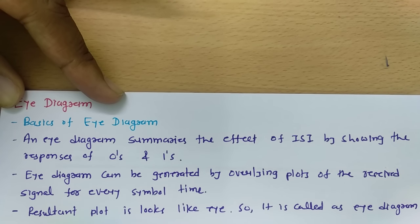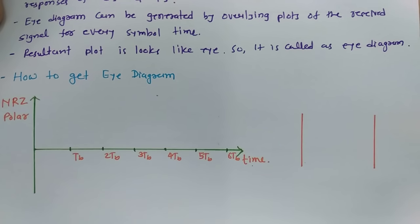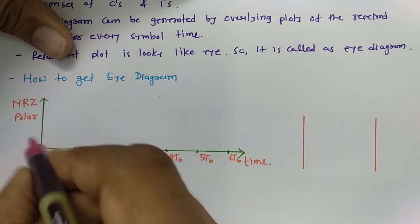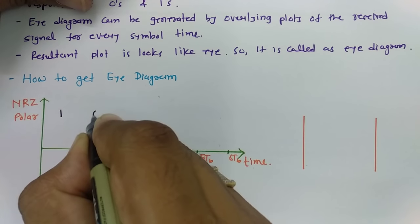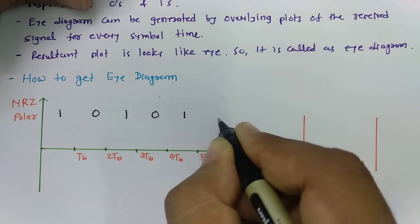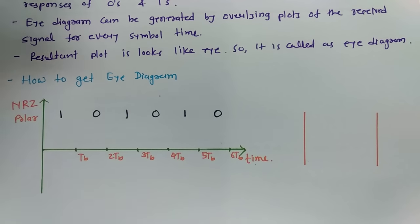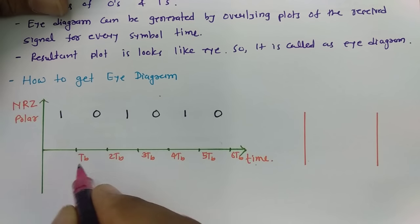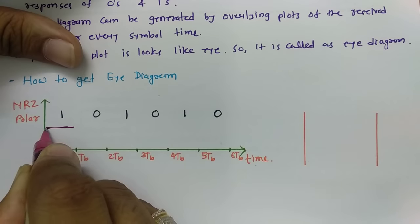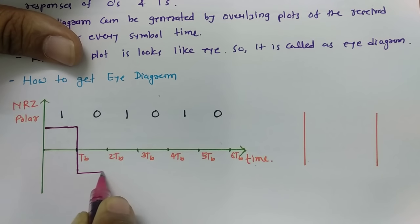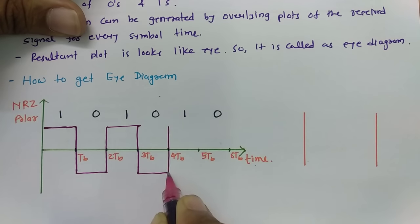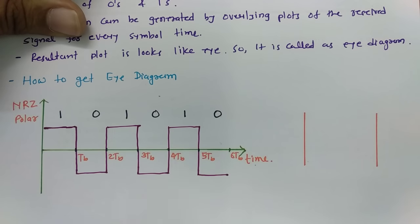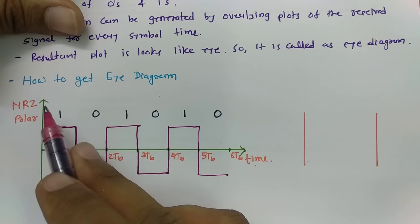The resultant plot of the eye diagram looks like an eye, which is why it is called the eye diagram. To understand this, let us look at one example. We have NRZ polar coding and a bit stream given by 1, 0, 1, 0, 1, 0. If you observe the waveforms, for 1 it will be a high value and for 0 it will be a negative value. That is how an ideal NRZ polar signal appears.